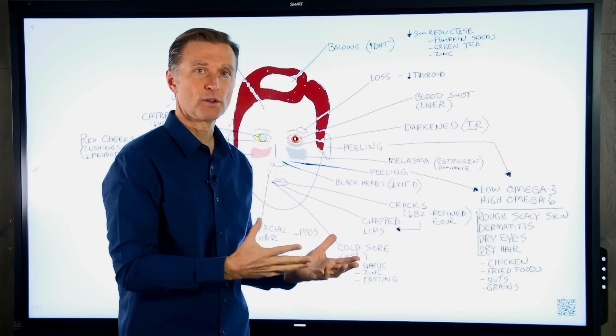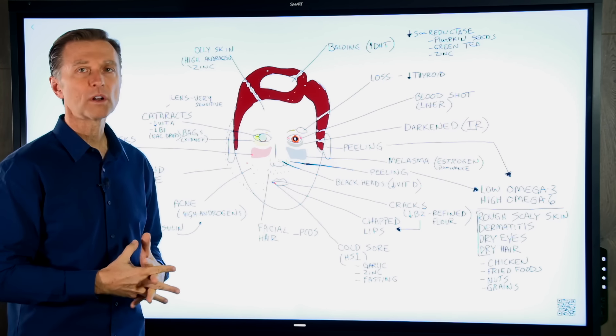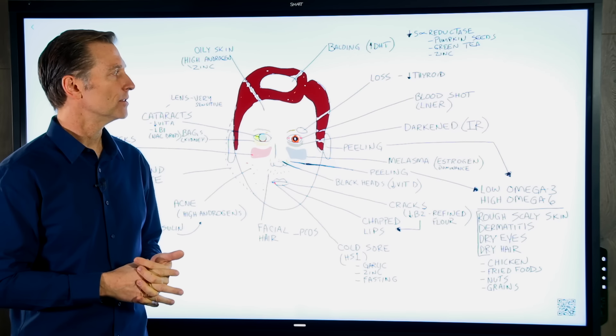Okay. Next thing is bloodshot eyes. That's usually a liver problem. Now it could be that you got drunk the night before and you have a hangover and you have bloodshot eyes, but it's either something related to the liver that is usually coming from your diet. I've noticed in the past, not recent past, a long time ago, when I ate poorly, a lot of junk food, my eyes were always bloodshot.